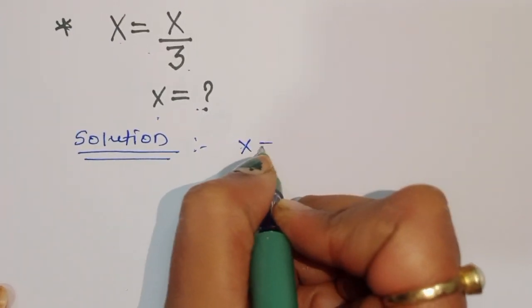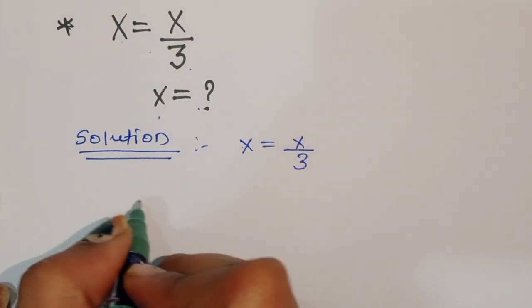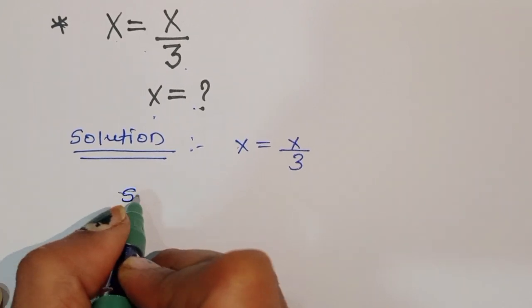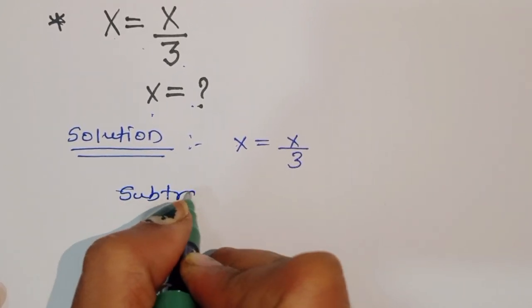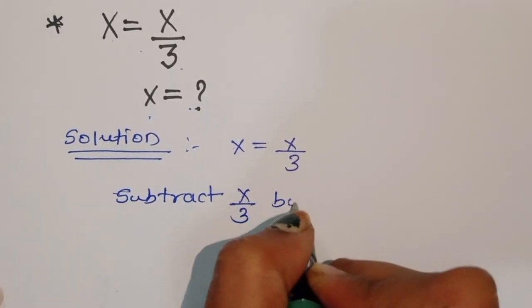x is equal to x/3, this is given. Now we can subtract x/3 from both sides.